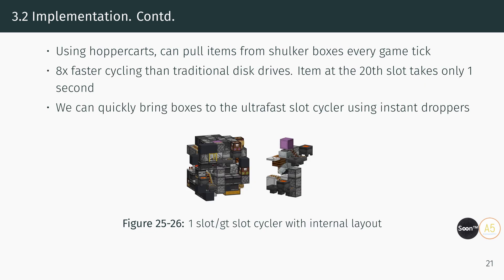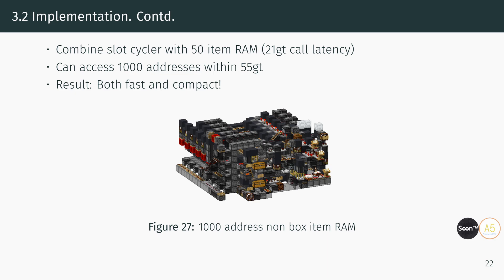The boxes can then be stored in an item RAM or item disk drive depending on the retrieval speed required. But we still need to cycle through items in the box to find the desired item, which is slow. The answer lies in using hopper carts, which have an 8 times faster transfer rate than hoppers, increasing the maximum cycling speed to 1 game tick per item. At this speed, the 20th slot takes only 20 game ticks — about 1 second. Since we cycle through boxes rather than chests, a box can be easily transported using instant dropper lines to the hopper cart, meaning one cart cycler can serve multiple boxes. Combining a hopper cart cycler with a small item RAM yields a device that retrieves one specific item out of a thousand in merely 55 game ticks — about 2.75 seconds — while being comparable in size to an item disk drive.